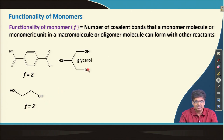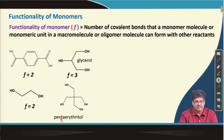Glycerol has three hydroxyl groups which can react with three acid groups, forming three covalent bonds, so F is 3. Pentaerythritol has four hydroxyl groups and can make four bonds with four acid groups, so in this case F is 4.